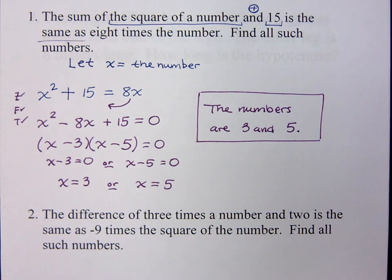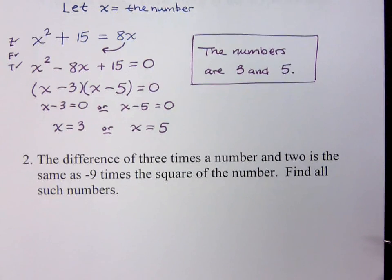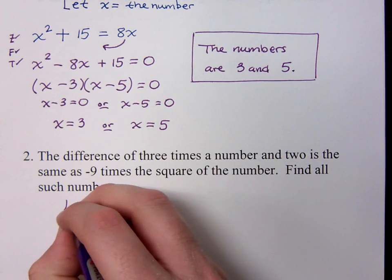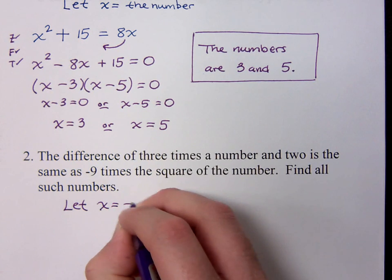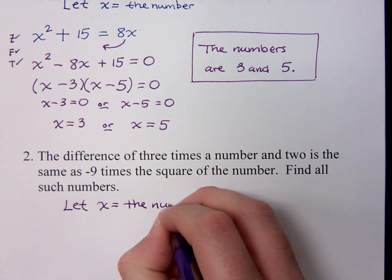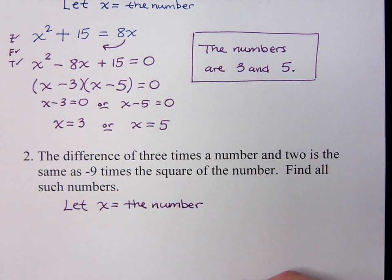And if you look at the second problem that we have on the page, it says the difference of 3 times a number and 2 is the same as negative 9 times the square of the number. Find all such numbers. So it's just like this first problem that we have. We're just looking for numbers, and we need to take the words, just like we did at the very beginning of this semester. Take the words and translate them into an equation, right? So, again, just like this top one, we just need to define our variables. We're going to let x equal the number. You could say the missing number. It does not matter.